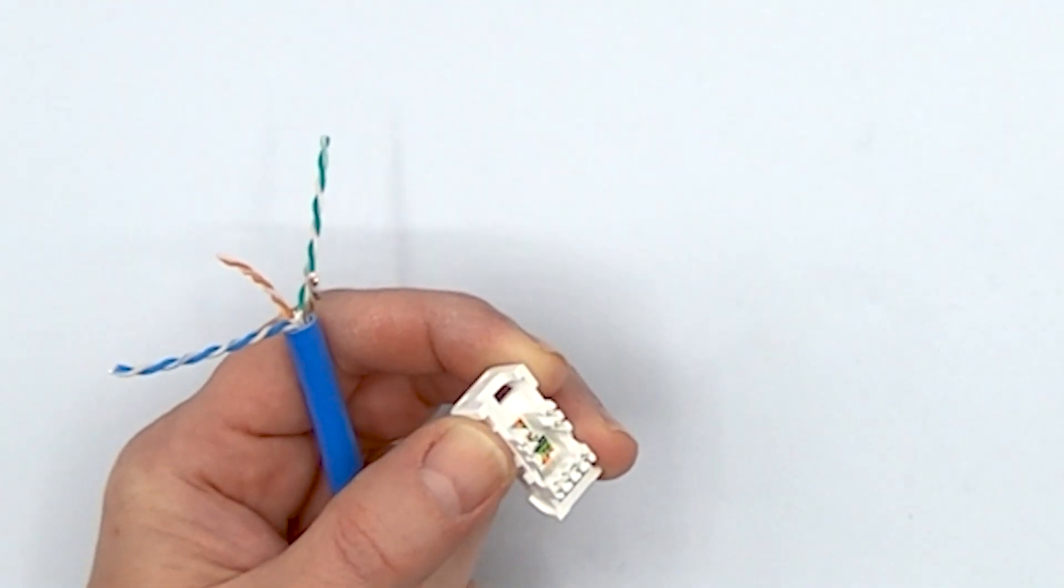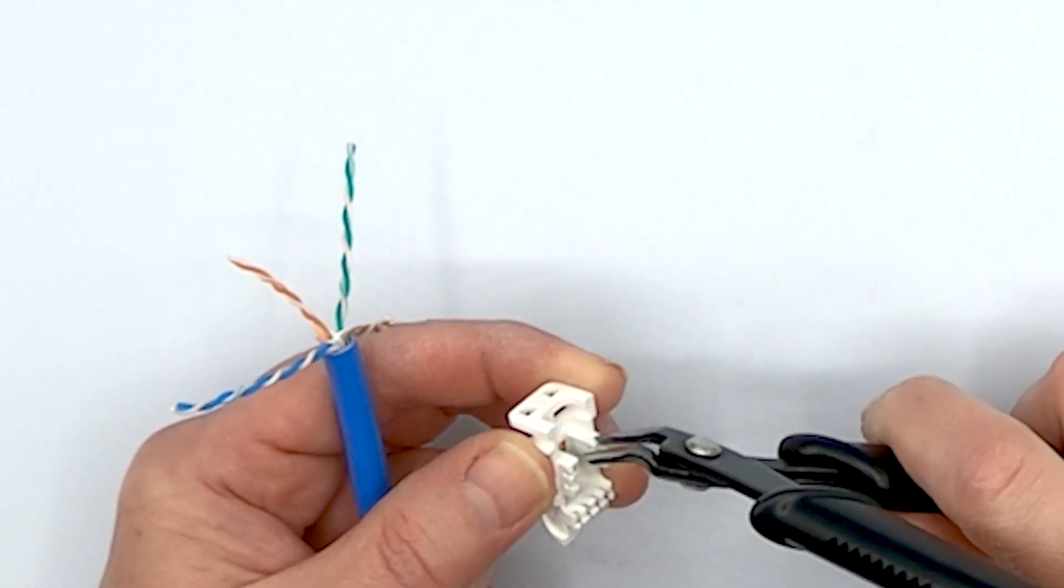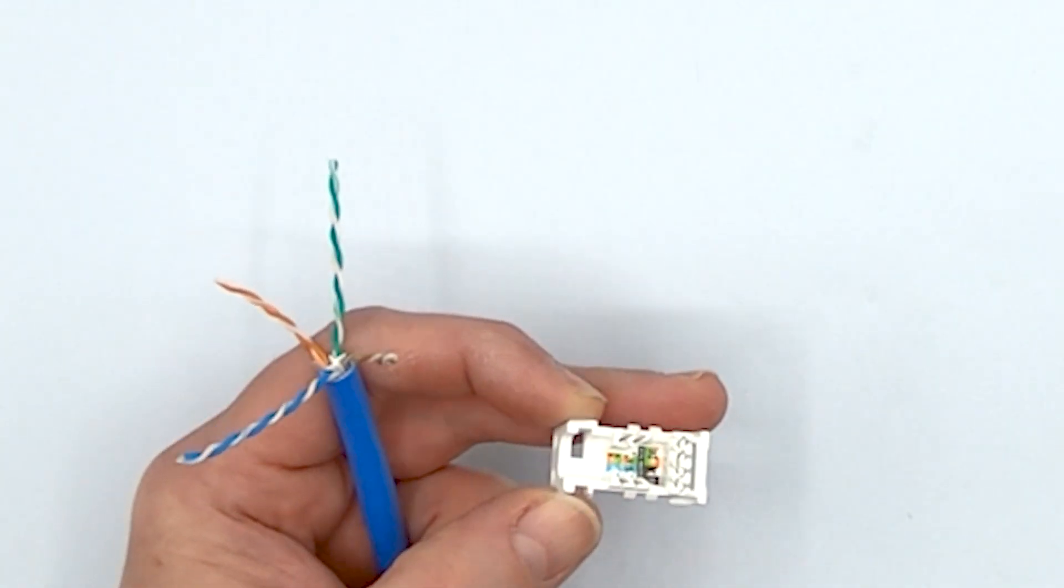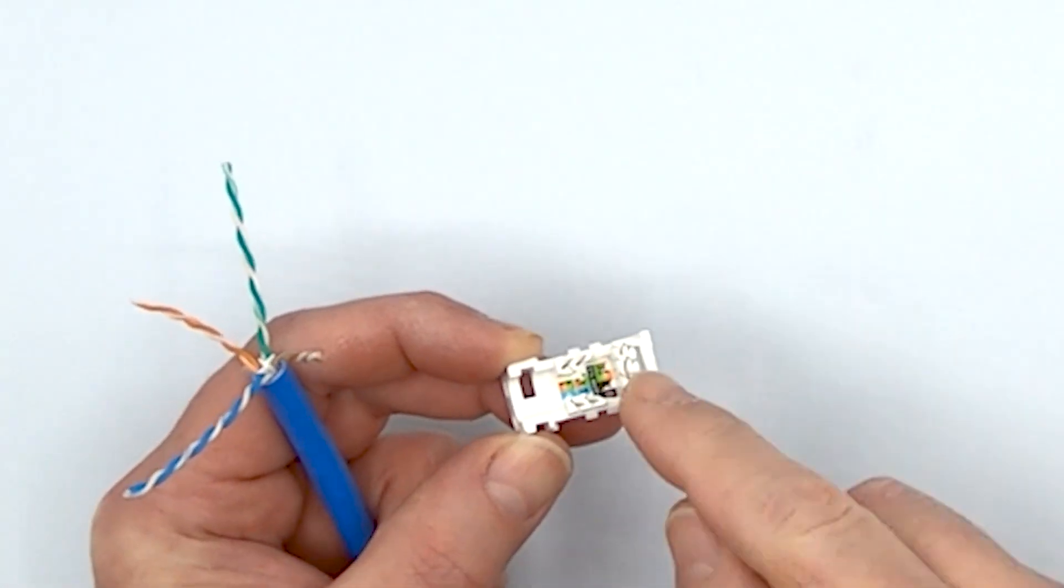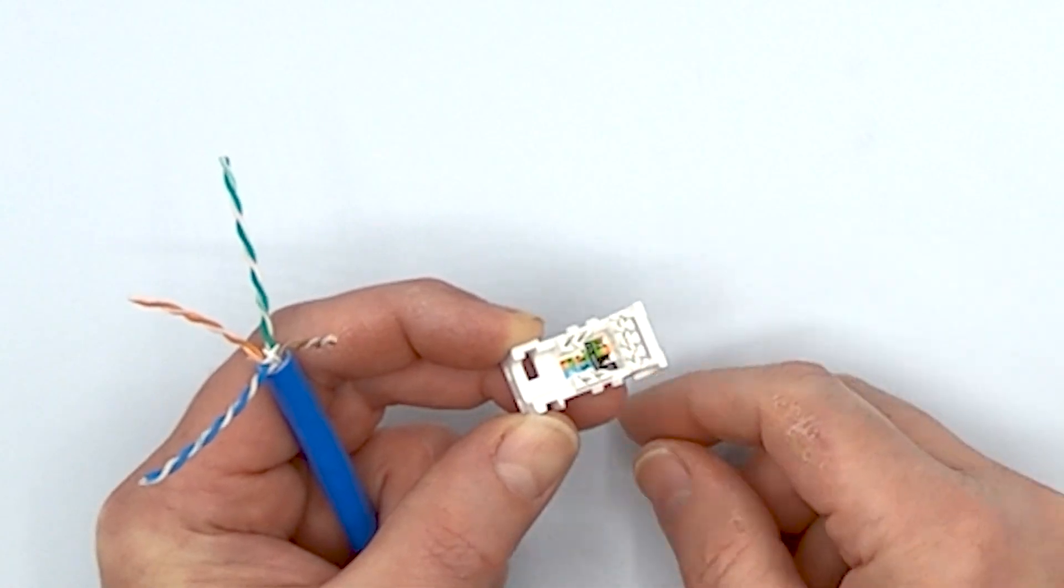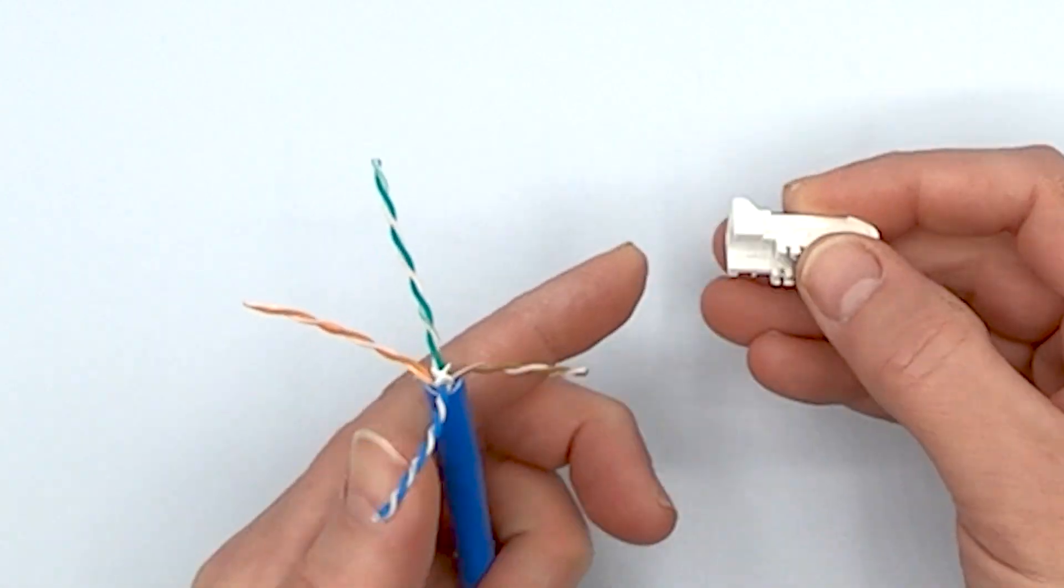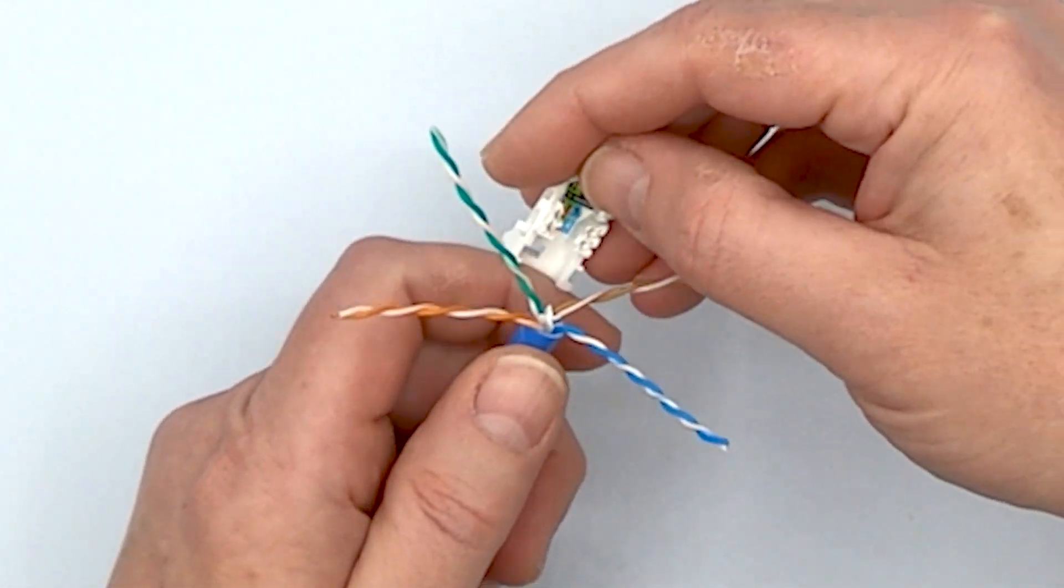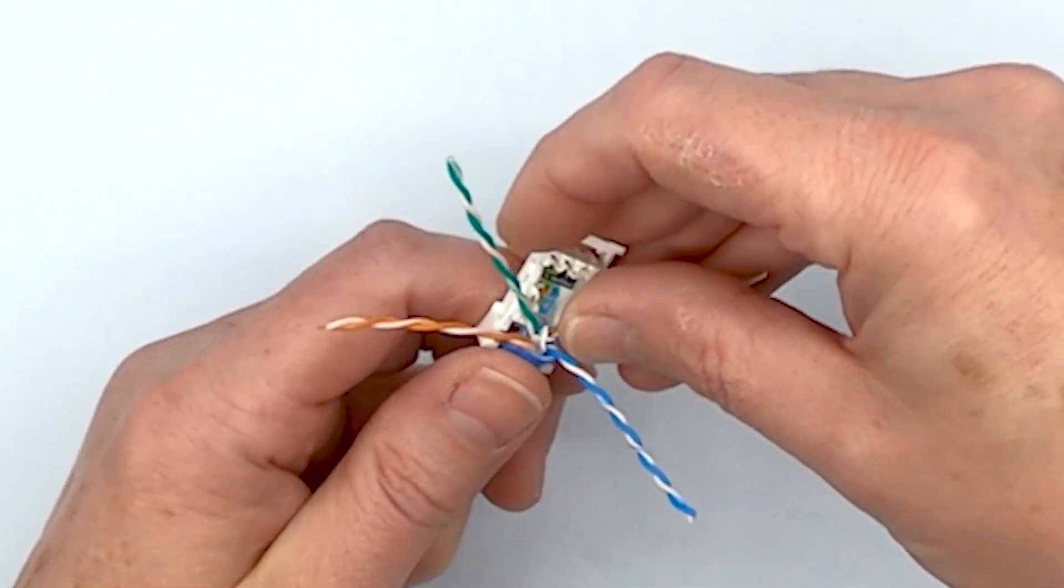The reason why is because that stop point helps set the half inch maximum untwist that you can have inside this conductor holder cap to maintain performance. So we know that blue is going first at the back here. We're going to untwist that pretty well all the way down.